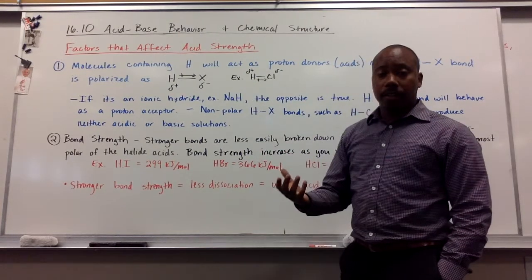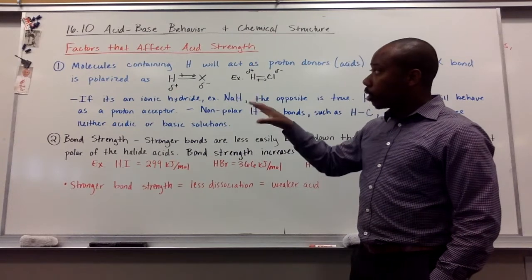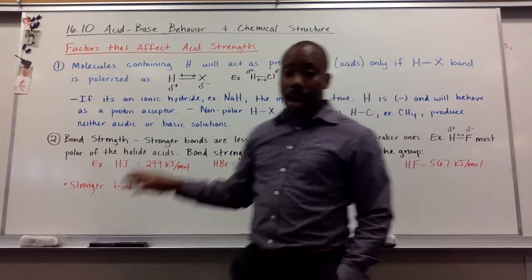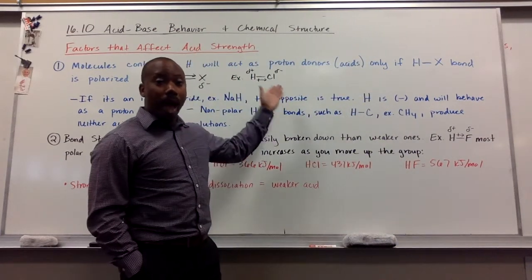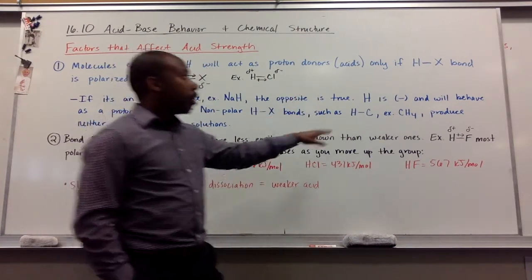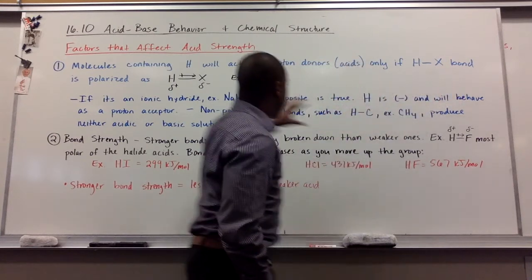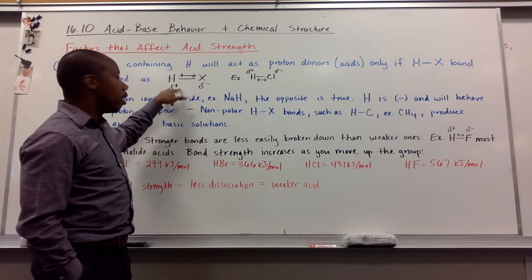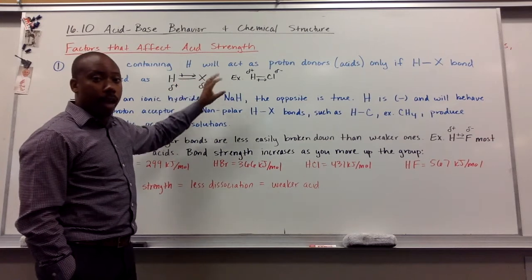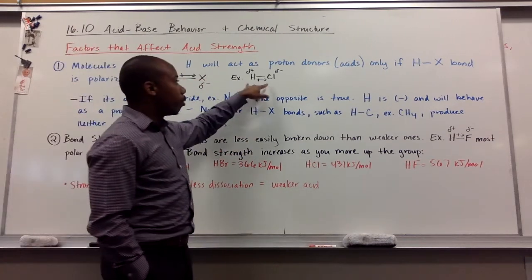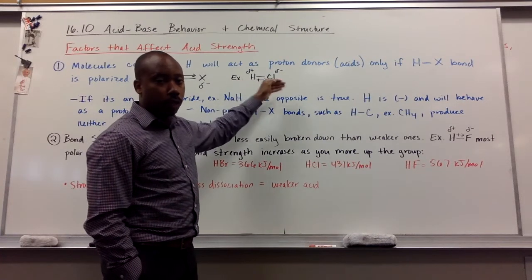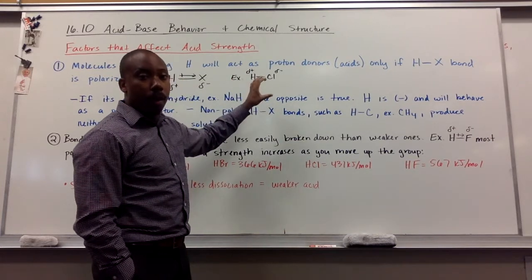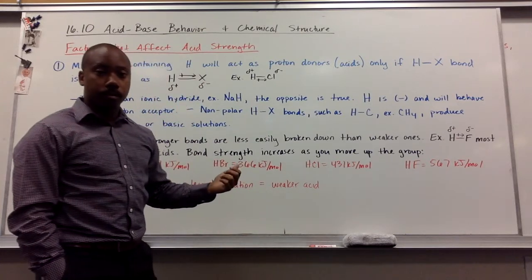Now, there are three primary factors that affect acid strength. The first is looking at what the molecule is made of, how it's arranged. When molecules contain hydrogen, they will act as proton donors, which are acids, only if that hydrogen is bonded to a substance and that bond is polarized, meaning this is a polar molecule. If it's a polar molecule where one side, the hydrogen, is partially positive, and the other side is partially negative, then you have an acid.